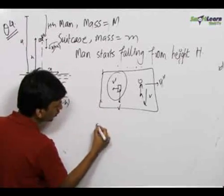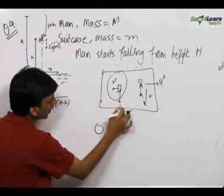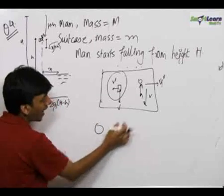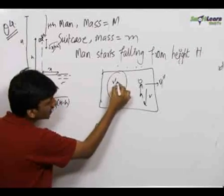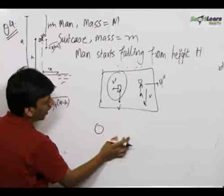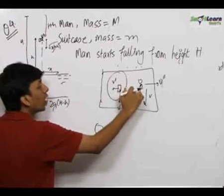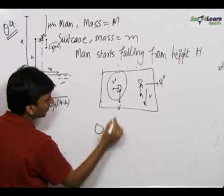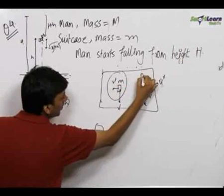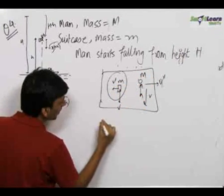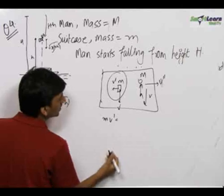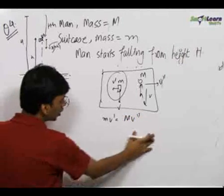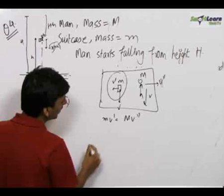Initially they were falling in the vertical direction, so the initial momentum of these two in the horizontal direction was 0. Therefore the final momentum has to be 0 again. When the bag was imparted a velocity in the left direction, the man acquired a velocity in the right direction so as to balance the momentum. The bag is of mass m and the man is of mass M, so we get mv' = Mv'', giving us a relation between v' and v''.